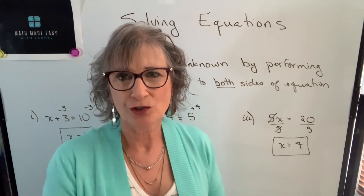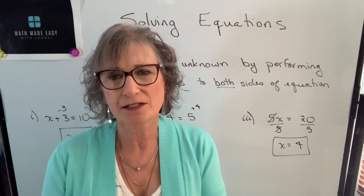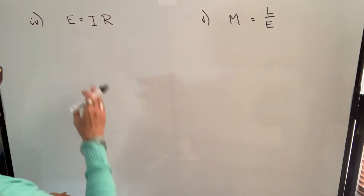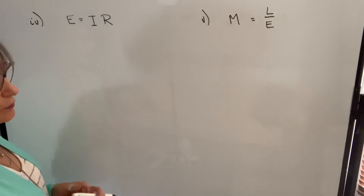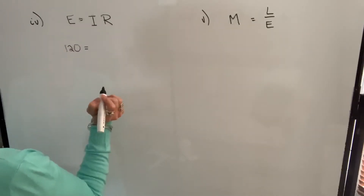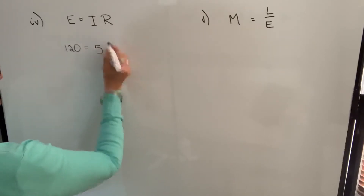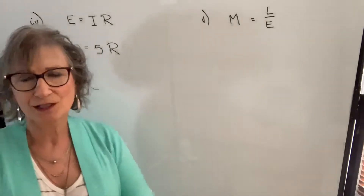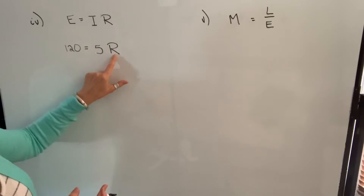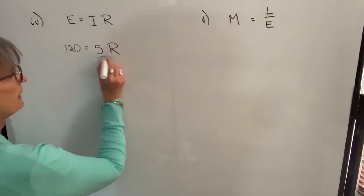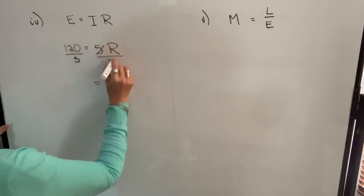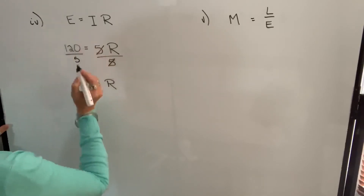Now let's look at specific formulas from the trades. This formula represents Ohm's Law — E equals I times R — where E is voltage, I is current, and R is resistance. If the voltage is 120 and the current I is 5, and we want to find resistance R: since 5 is multiplied to R, we divide both sides by 5. The 5s cancel, leaving R equals 120 divided by 5, which is 24.